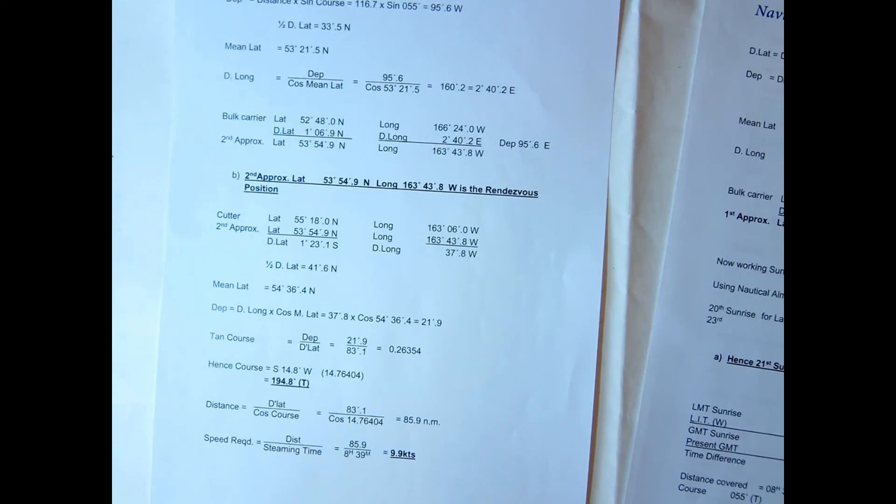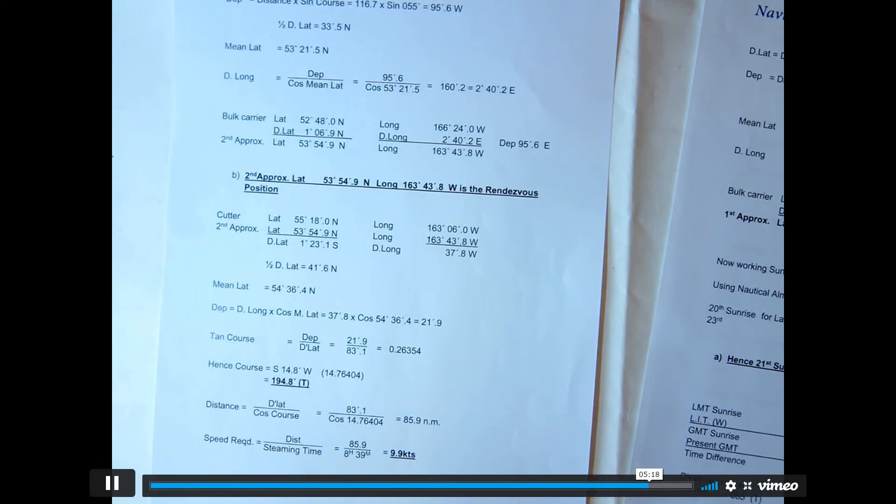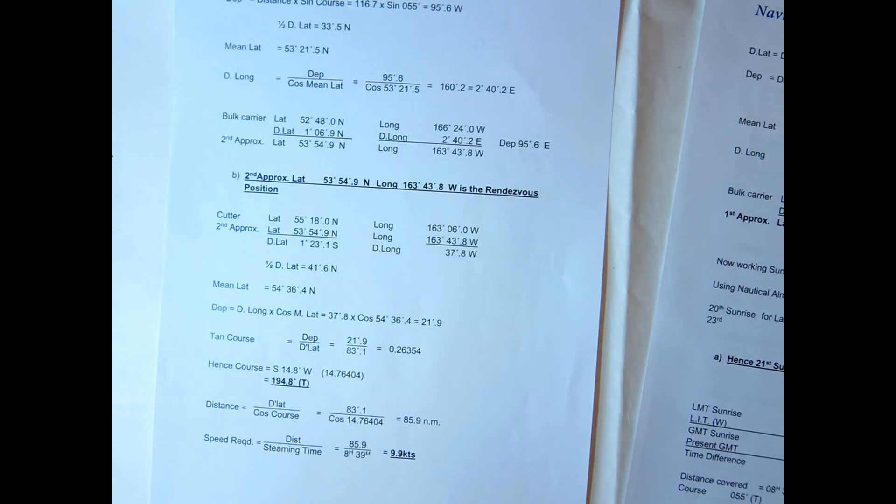So with these problems you always have to get a second approximate position and then solve the problem. So you can't just use one approximate and leave it at that. You have to get your first approximate position, reappraise the time of sunrise and the steaming time to get your second approximate position, and then you can use that second position as the rendezvous position to calculate any course and speed required by the other vessel.